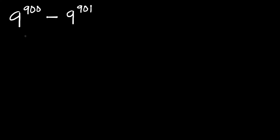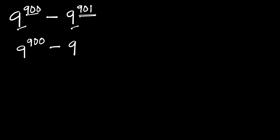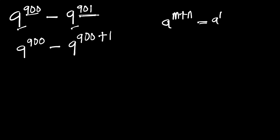In this video we are going to evaluate 9 to the power of 900 minus 9 to the power of 901 without making use of a calculator. We can rewrite 901 as 900 plus 1. We will make use of the known identity: if you have a to the power of m plus n, this equals a to the power of m times a to the power of n.